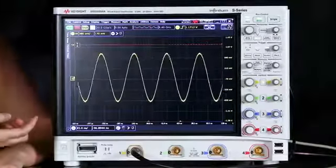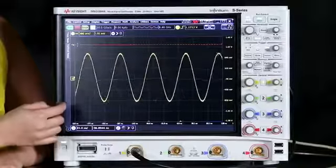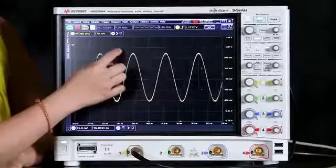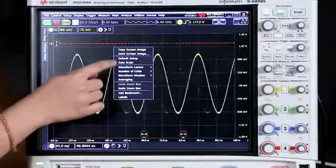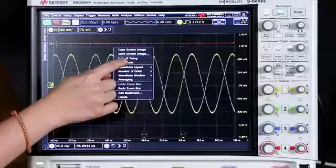If we want to have the scope set it up for us, we can either use autoscale on the front panel or we can right-click. To right-click with touch you just hold your finger down until the circle appears and then we'll choose autoscale from this menu.